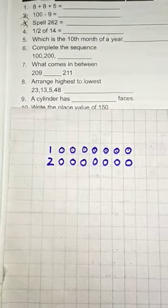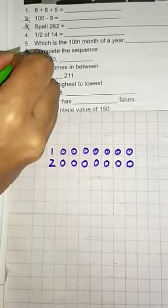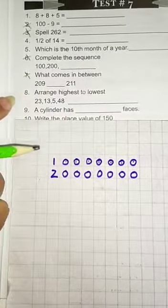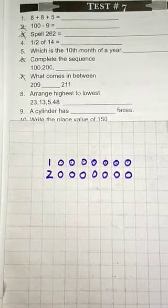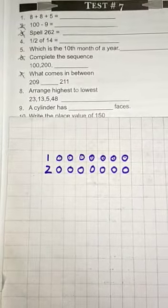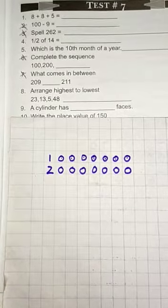Question number 6. Cut this. Question. We haven't done 100. Cut question number 7. Question number 8. Arrange highest to lowest. You have to arrange this. Start from the bigger number and go to the smaller number. Okay.